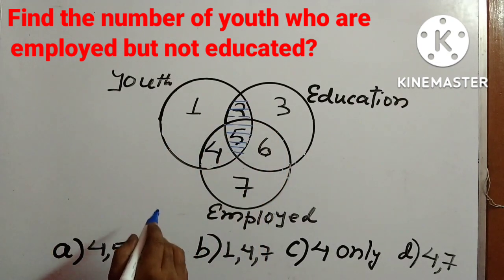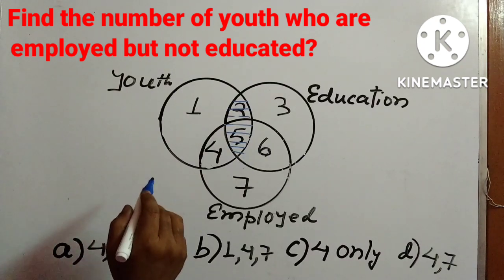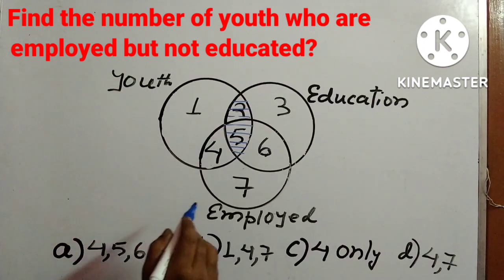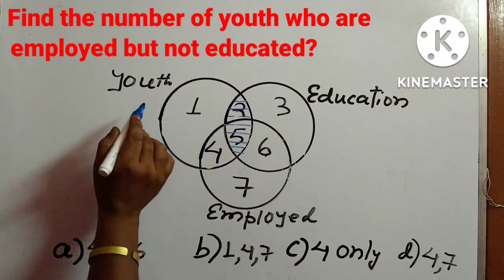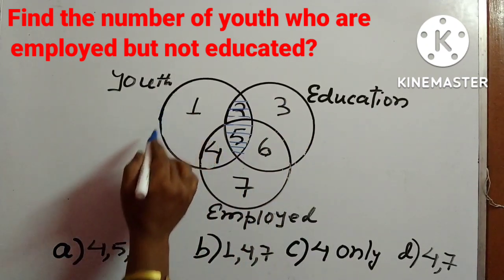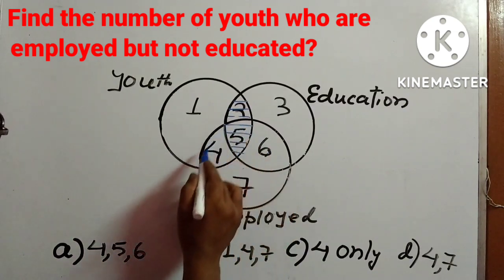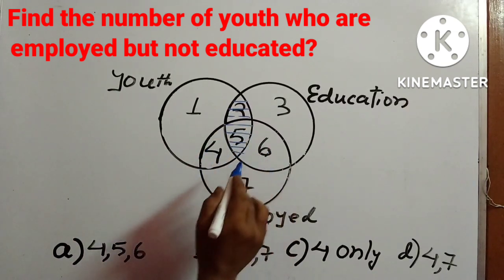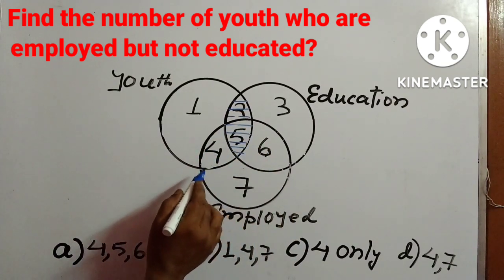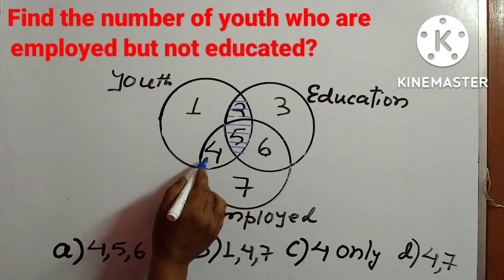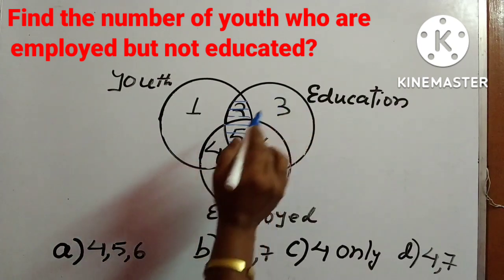Now we need to consider youth who are employed but not educated. We have to consider this youth circle and the employment circle, and we have to find the number of youths who are employed but not educated.